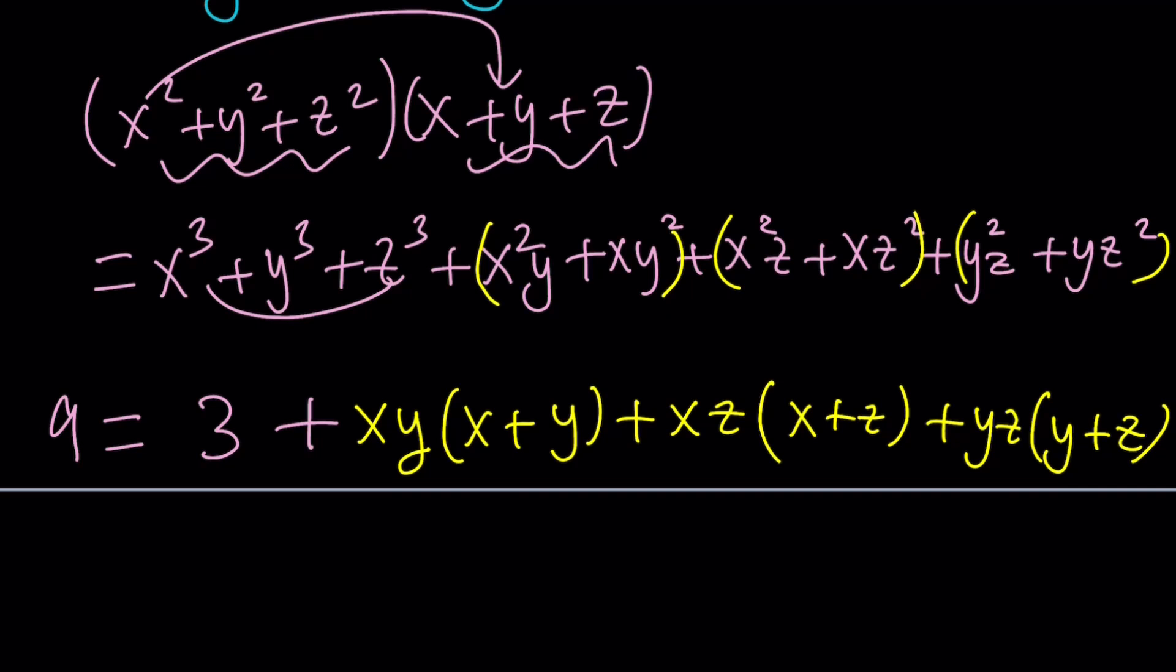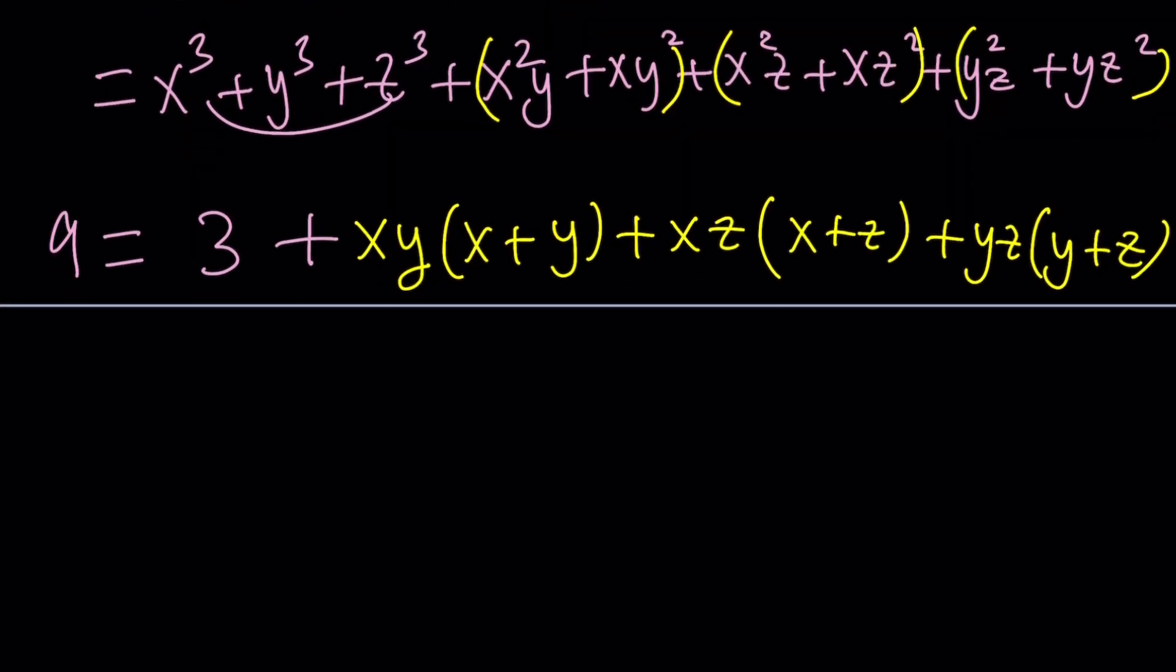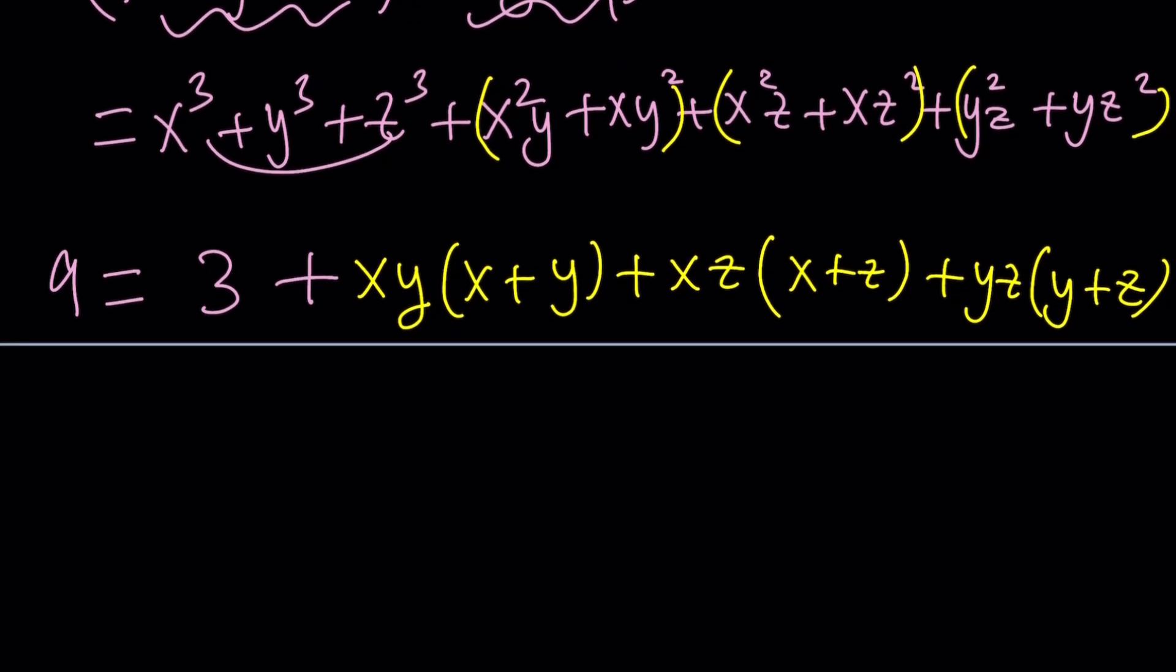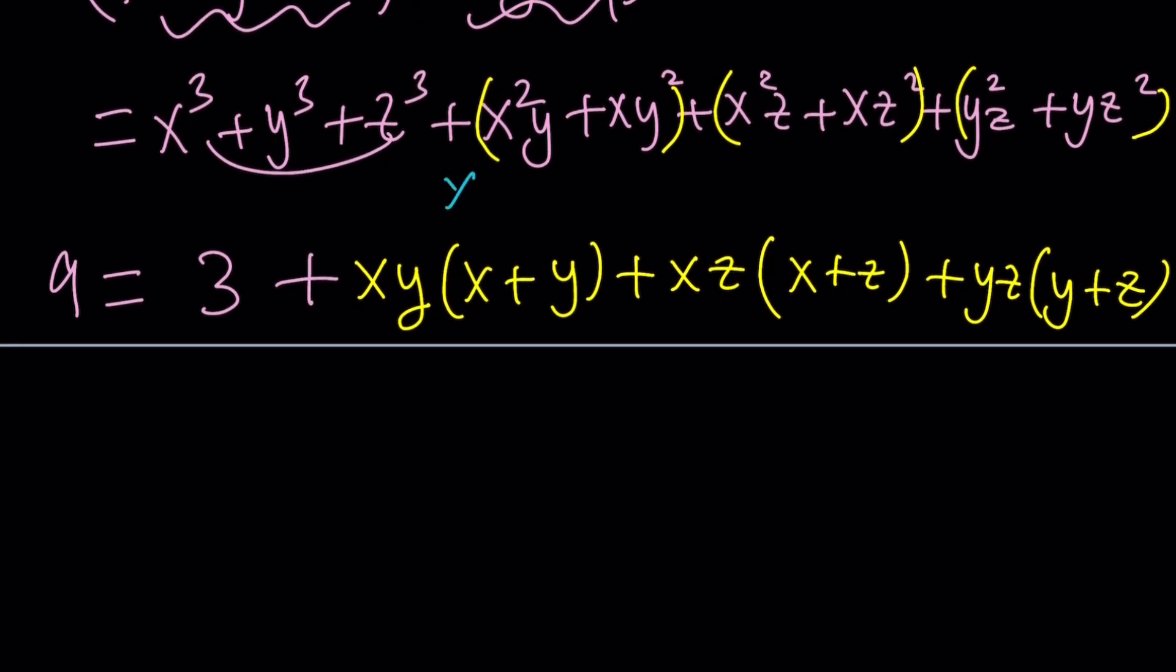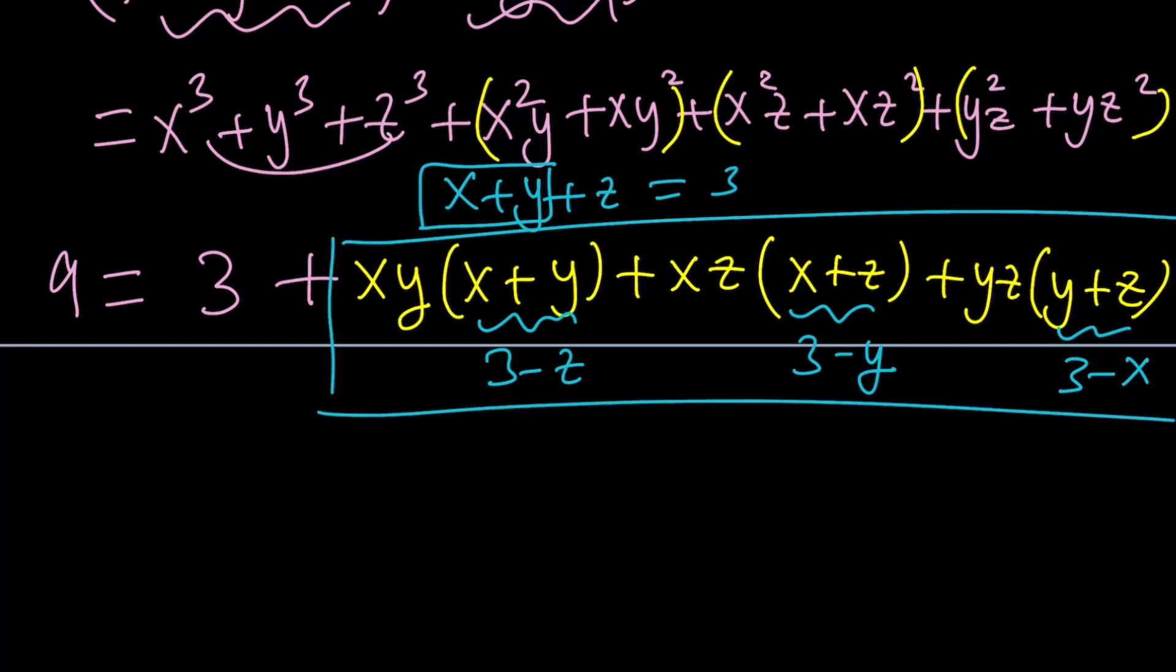Now we can definitely factor this. But how? We must use a very important identity. And that's going to come out from the original system. Remember what x plus y plus z is. It's equal to three, right? So this allows us to write the sum of the two variables in terms of the third one. In other words, x plus y is equal to three minus z. This can be written as three minus y. And this can be written as three minus x. Awesome. But now we have nine equals three plus something. So this thing right here is equal to six.